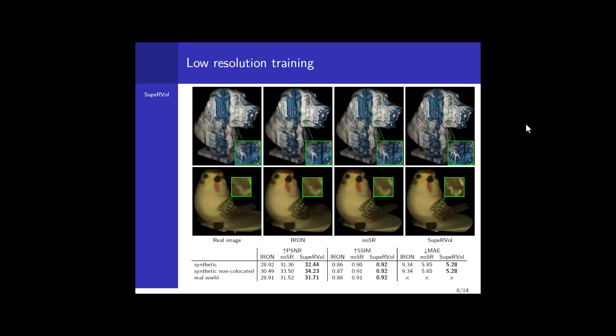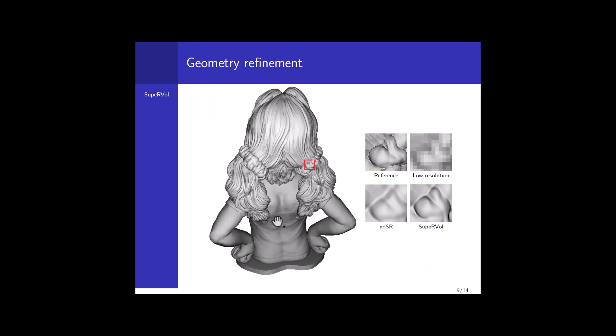For the second scenario, we can clearly see that our framework Supervol yields much sharper renderings compared to iron and no-SR. Moreover, it faithfully represents some details that are barely visible in the low-resolution input images. This next example confirms that not only the rendering has those properties, but even the geometry is also appropriately super-resolved.